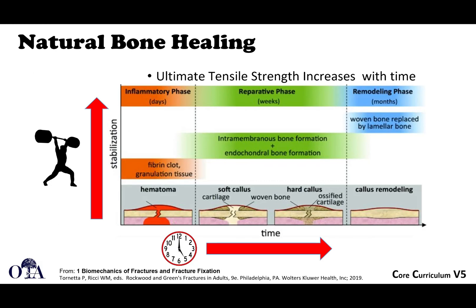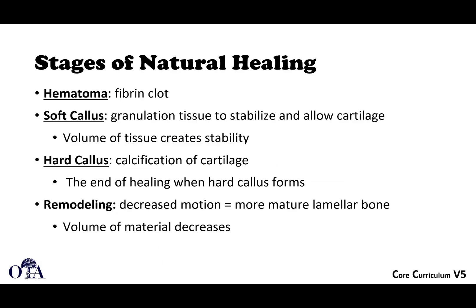Over time, the ultimate tensile strength of the fracture with secondary bone healing increases. You go from hematoma to soft callus, to hard callus, and eventually to mature remodeled bone. The inflammatory phase involves a clot, then granulation tissue that stabilizes, followed by calcified cartilage and hard callus, and finally normal biomechanical loading allows for remodeling. The volume of the callus can decrease somewhat over time.